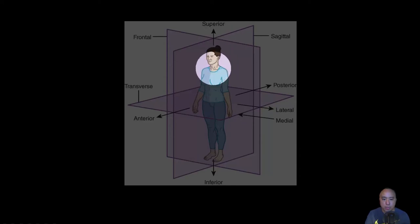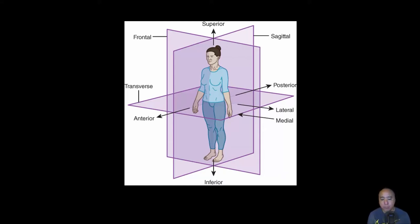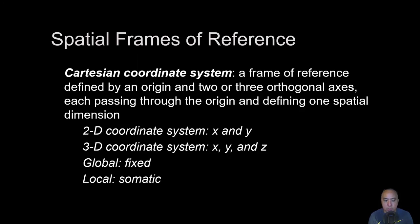Superior-inferior, anterior-posterior, and medial-lateral axes are shown here. For example, shoulder flexion and extension occurs in the sagittal plane, rotating about the medial-lateral axis — same with knee flexion and extension. Hip abduction and adduction occur in the frontal plane about the anterior-posterior axis. These planes and axes form the reference frame by which clinical movements such as flexion, extension, abduction, adduction, and internal and external rotation are measured.